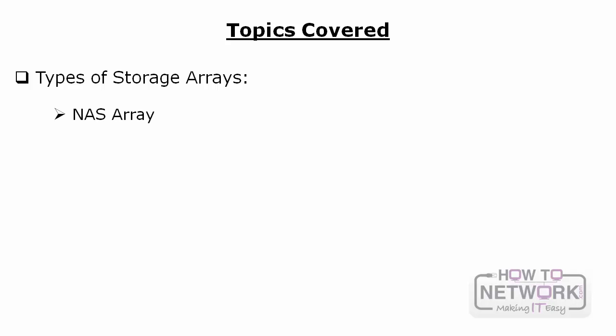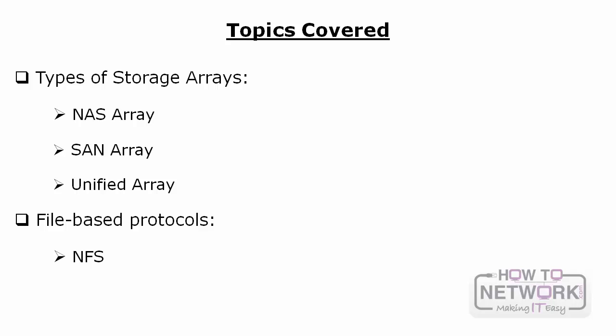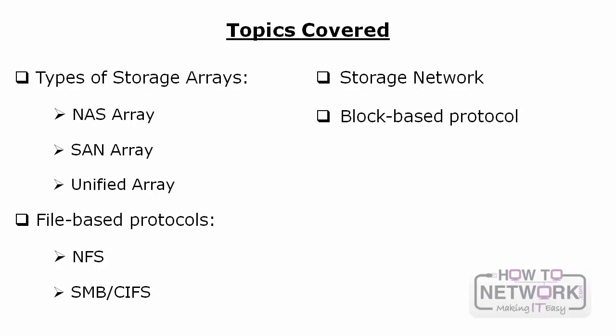Next we will look at the types of storage arrays: Network Attached Storage, or NAS Array; Storage Area Network, or SAN Array; and Unified Array. When we cover the NAS Array, we will touch upon file-based protocols such as NFS and SMB CIFS. We will then look at what a storage network is and touch on block-based protocol. Lastly, when we cover the SAN Array, we will look at what LUNs and Volumes are.